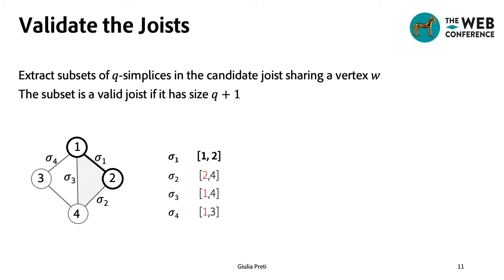Going back to our example, we created two subsets, the first one with sigma2 and sigma3, because they share the vertex 4, while the second one only with sigma4. Only the first subset satisfies the size constraints, and therefore we have only one joist.